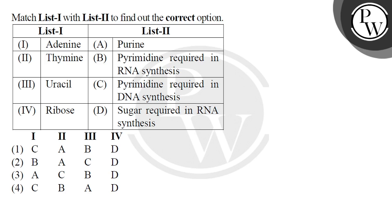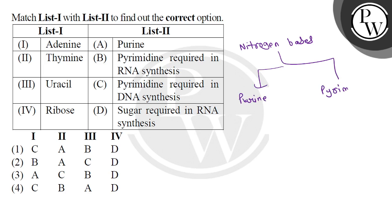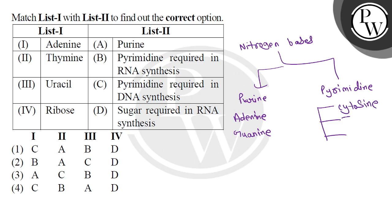If we talk about adenine, it is a nitrogen base present in polynucleotide chains. Nitrogen bases are of two types: purines and pyrimidines. Purines are of two types — adenine and guanine — and pyrimidines are of three types — cytosine, thymine, and uracil.